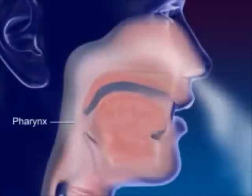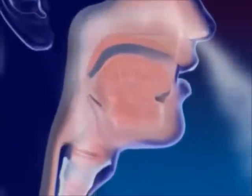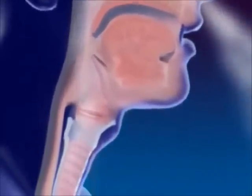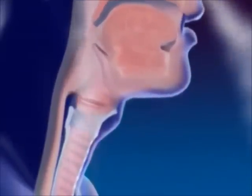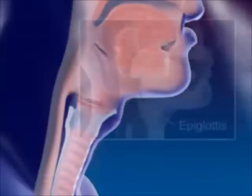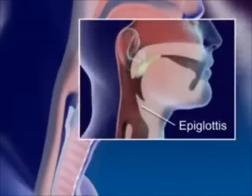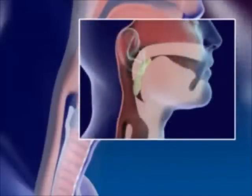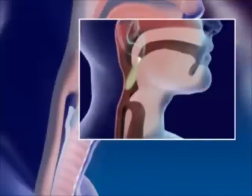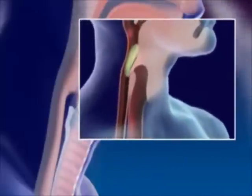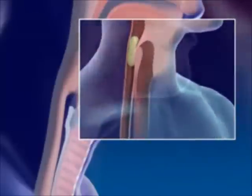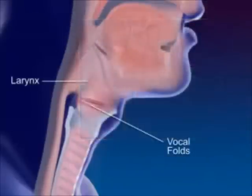Air moves into the pharynx, or throat, the common passageway for food and air. Air continues on to the larynx. The epiglottis, a flap of tissue in front of the larynx, closes off the larynx when swallowing to prevent food from entering. The larynx, or voice box, contains the vocal folds.